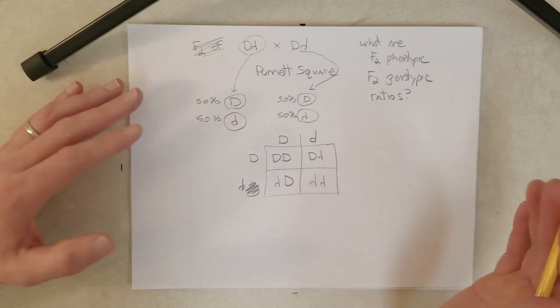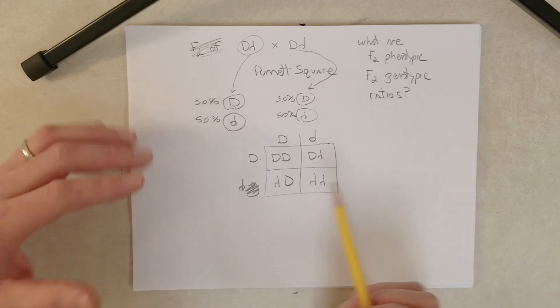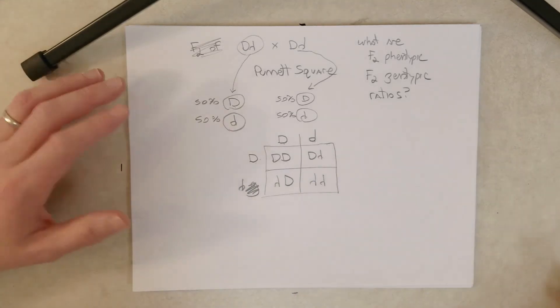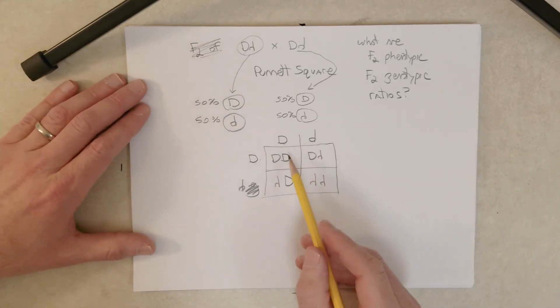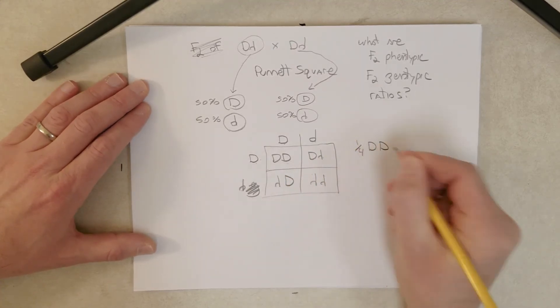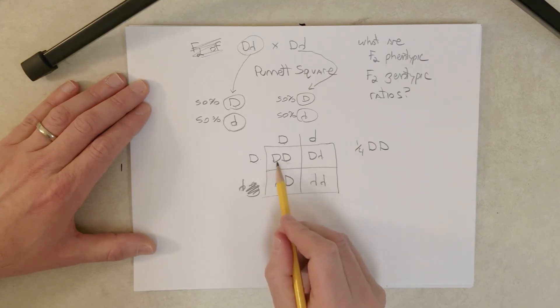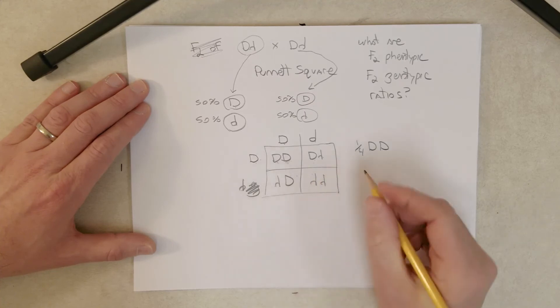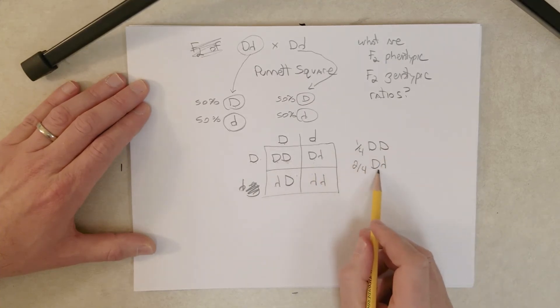So, and this is a random process. So if there were, say, a hundred or a thousand or a million fertilization events, we would expect one, two, three, four—one out of four to result in this homozygous dominant genotype. Two out of four, one, two, two quarters—